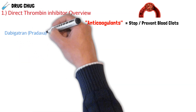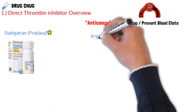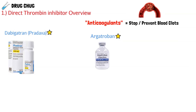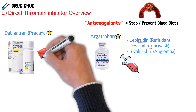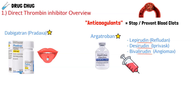There are two main direct thrombin inhibitors. First, we have dabigatran, brand name Pradaxa. Then we have argatroban, which doesn't have a brand name and is an injection. On the injection side there are also three others: lepirudin, desirudin, and bivalirudin. But we'll focus on dabigatran and argatroban since those are the ones you'll most likely see. What's unique about dabigatran is that it comes in oral capsules, so we can dispense it to patients to take orally.